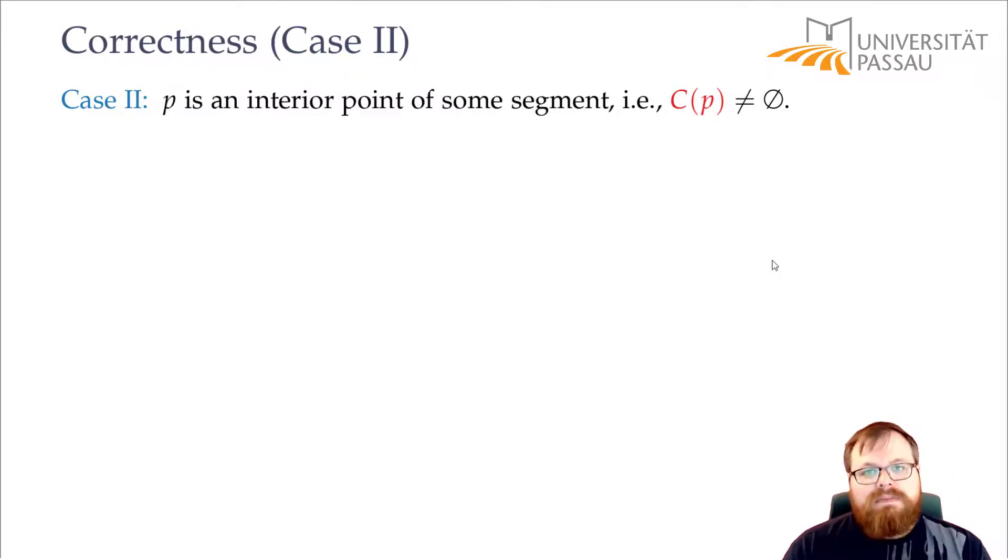If P is also the endpoint of some segment, then we already inserted it into the queue at the very beginning. So it's already there. And in that case we can proceed exactly as in case 1.